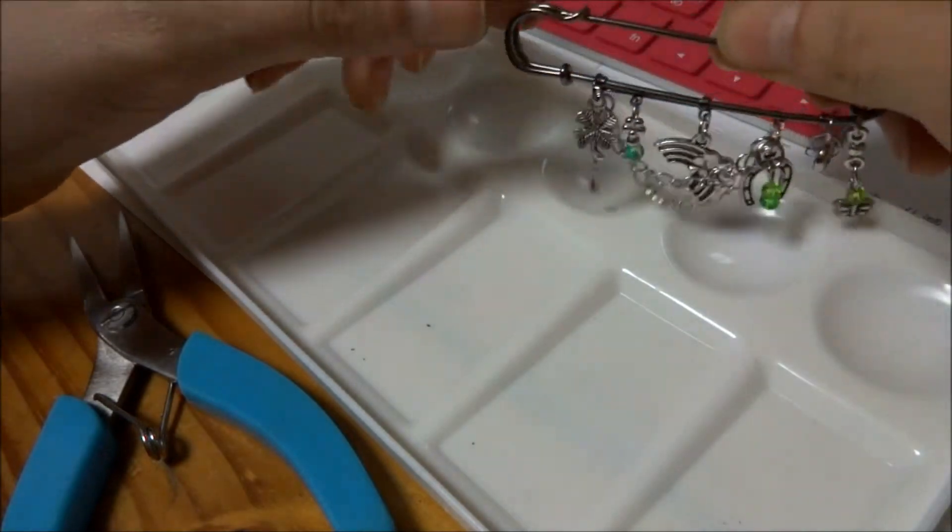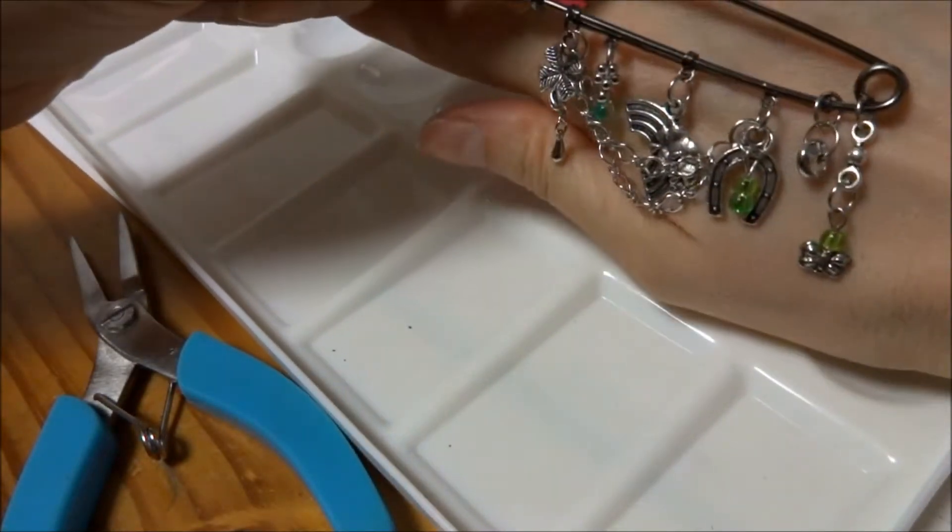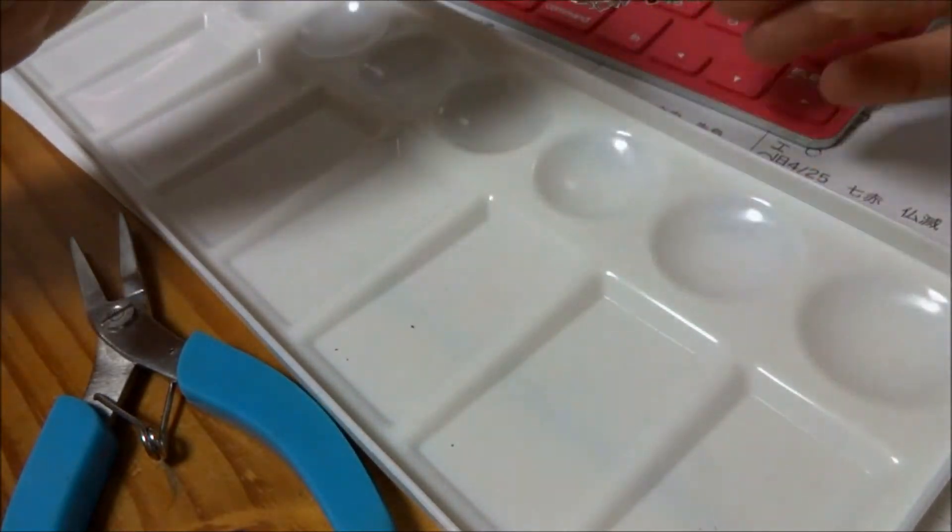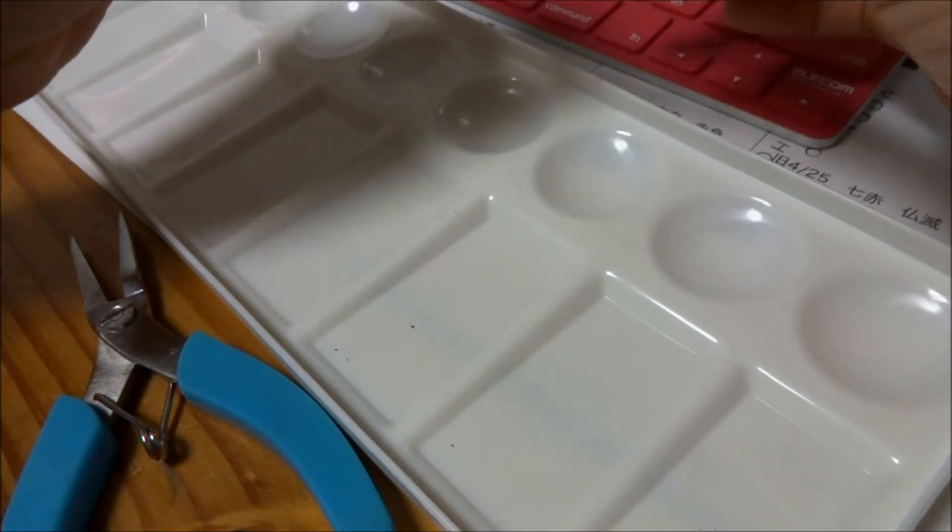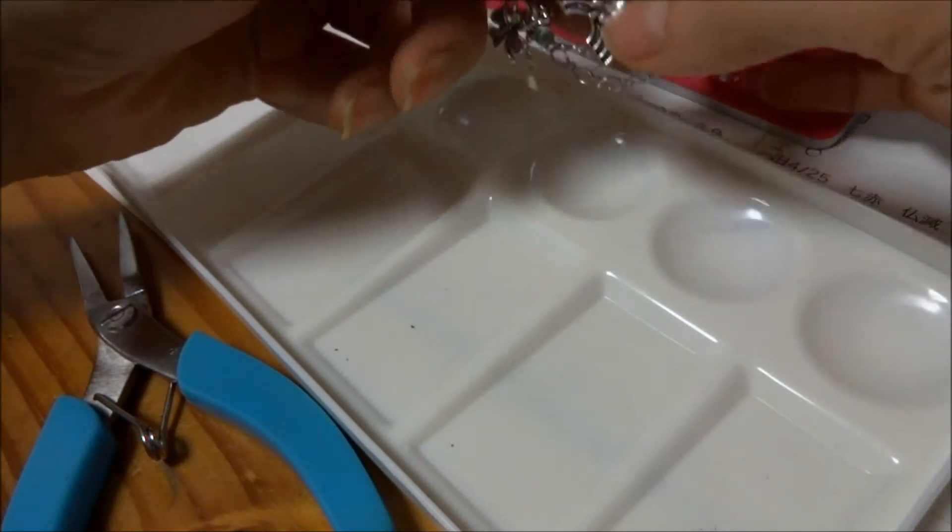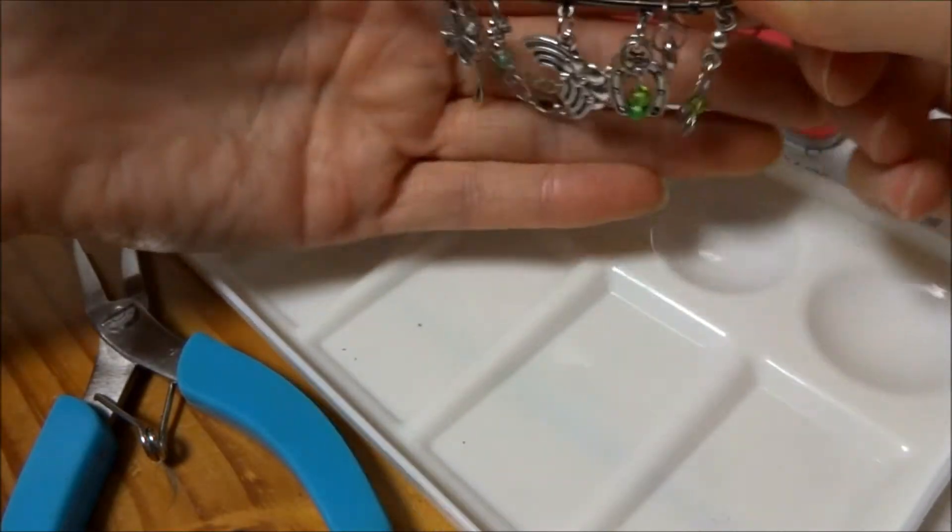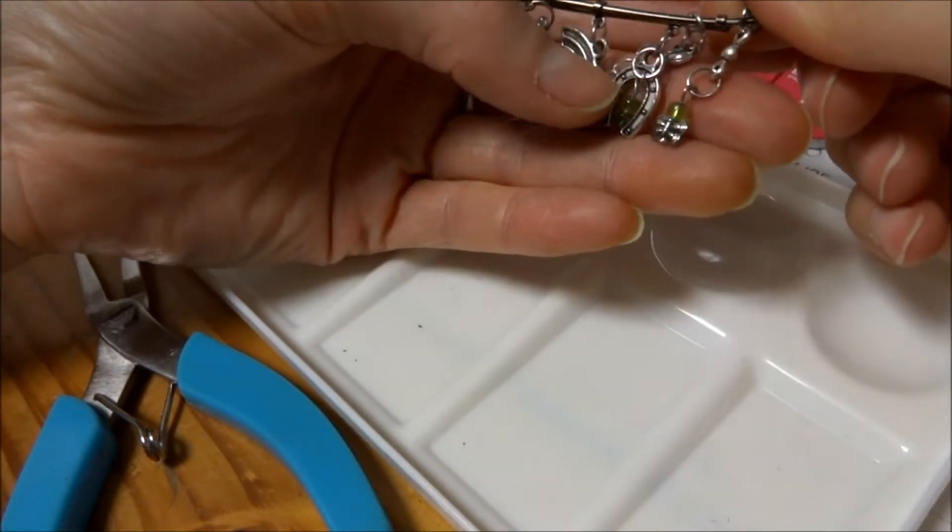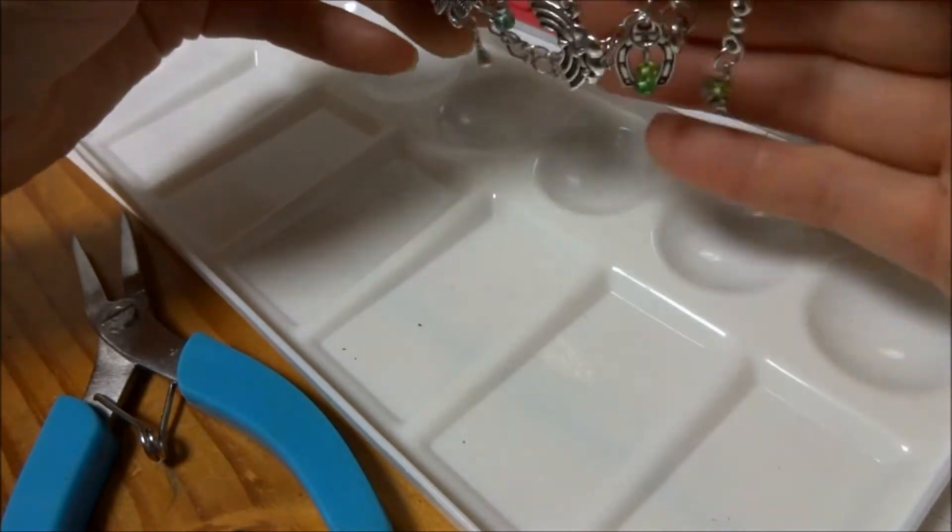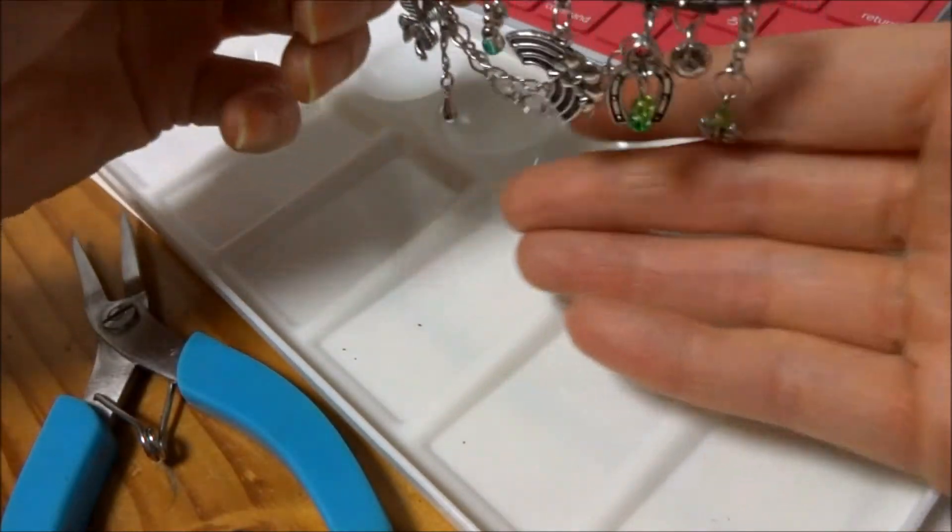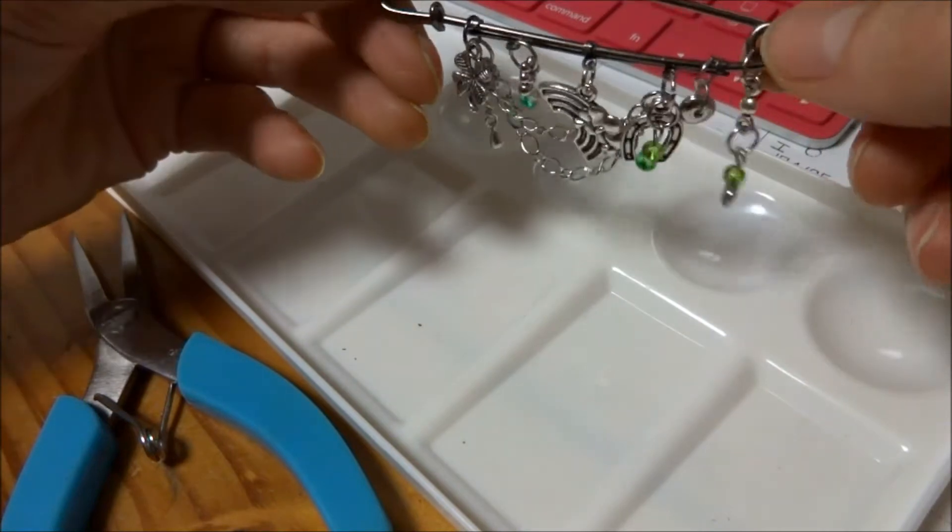And then this is a silver one and this one's like my favorite. It's so pretty. It's got all these lucky charms on it, like the rainbow and the clover and the horseshoe and then this cute little butterfly and it's all silver with these little green beads. That's super cute.